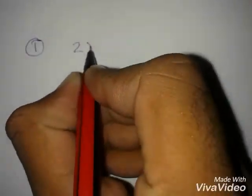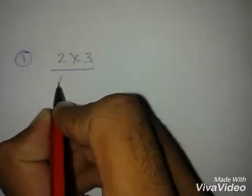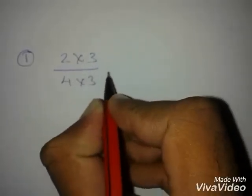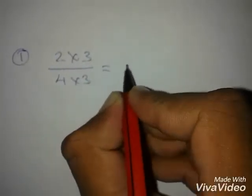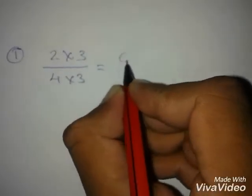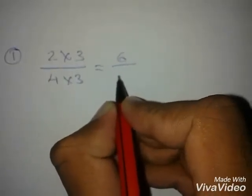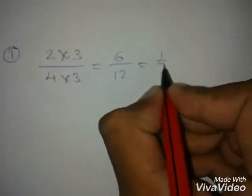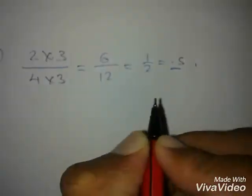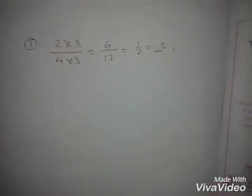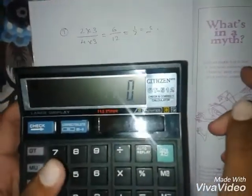Let's take a simple example first: 2 into 3 divided by 4 into 3. It's manually very easy to do. 3 into 2 is 6, divided by 4 into 3 is 12. The answer is 1 by 2, that is 0.5. I'm going to teach this in calculator.